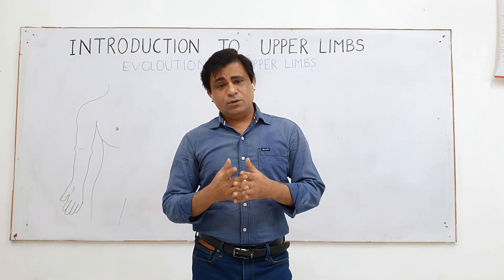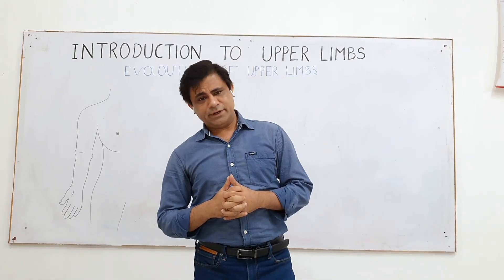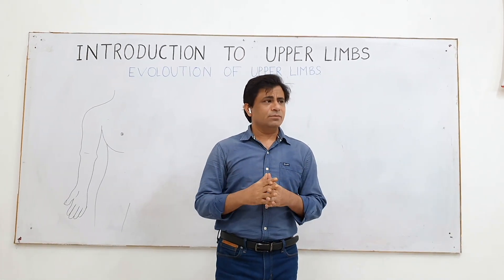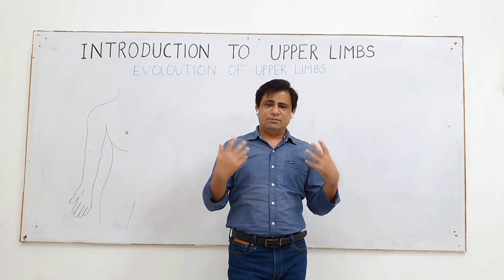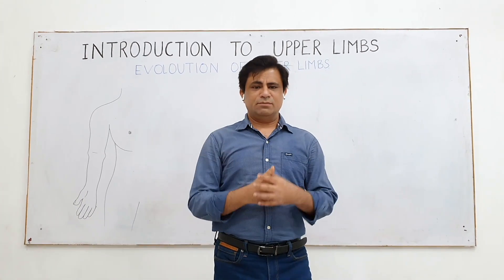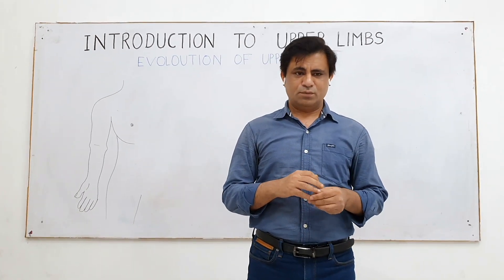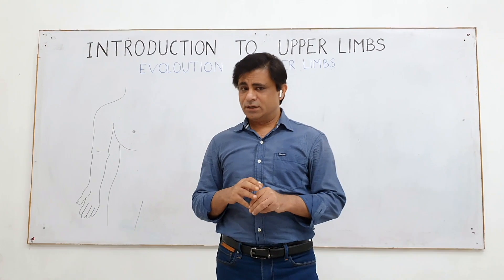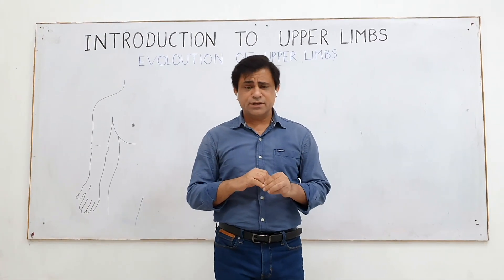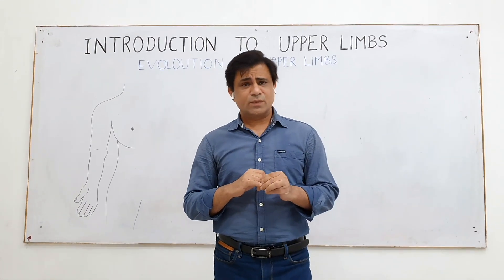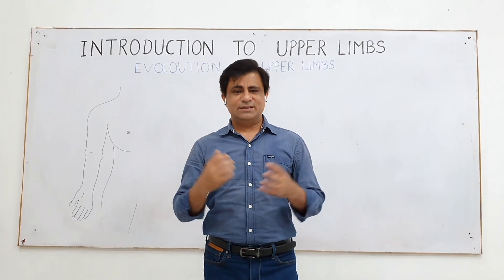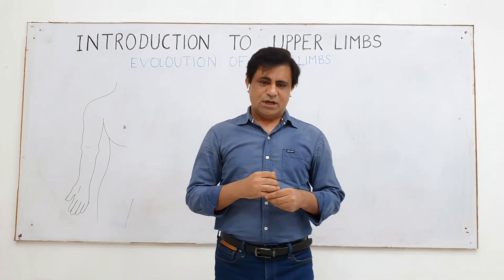Also for mechanical purposes — this upper limb is what makes man the most superior of all the animal kingdom. Man is the master mechanic of all the animal kingdom, and the reason is the highly developed upper limbs.